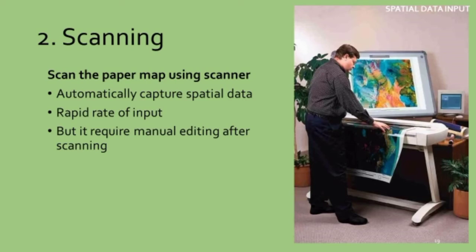The second method to include spatial data is scanning. It simply involves scanning the map using a scanner, which captures the map automatically — similar to any scanner — and allows a rapid rate of input. If there are 20 maps you can scan all 20 at once, rather than drawing each boundary with the digitizer. Scanning is much easier but requires manual editing after scanning, so there will be some post-processing.